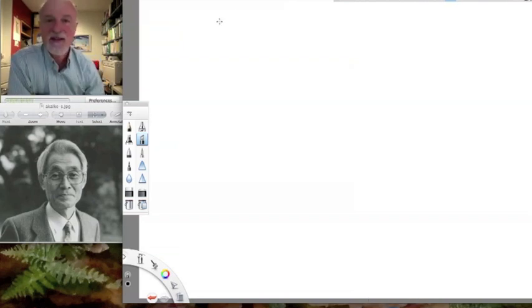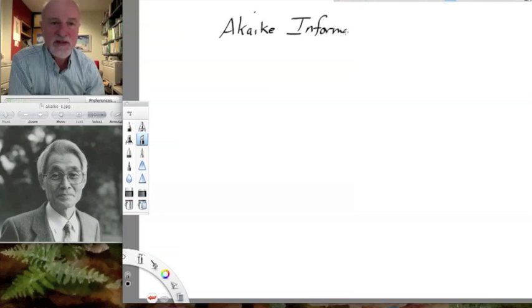His name is Hirotugu Akaike. His picture is shown below me there. He was famous for coming up with the Akaike information criterion.